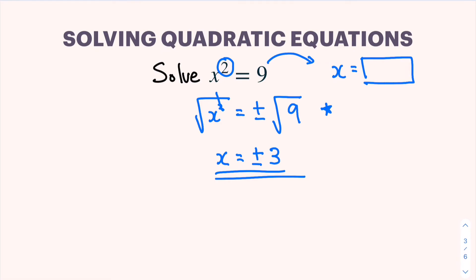And it is very important that we write plus and minus in front of 3. And that is because if we don't and write it as x is equal to 3, that means that there is only one value of x, 3, that satisfies that equation. But as we know, the square of negative 3 is also 9, so we need to make sure that we have both our answers: plus minus 3.